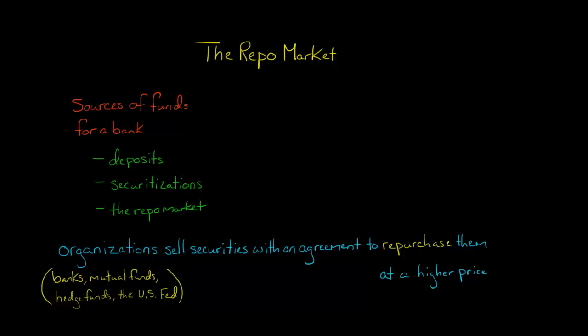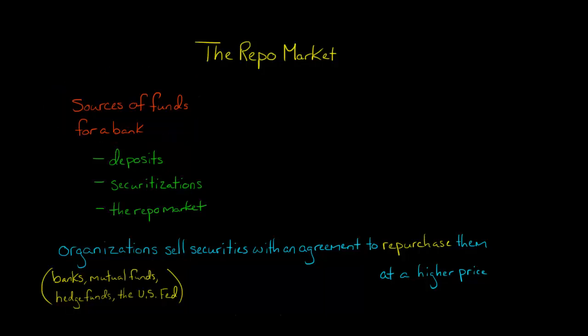We've been talking about different sources of funding for a bank and how historically banks relied almost entirely on deposits. But more recently, they've come to tap funding from alternative sources, such as securitizations, mortgage-backed securities, and other types of asset-backed securities.